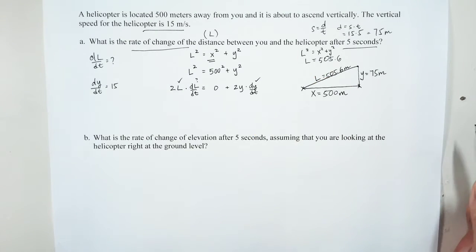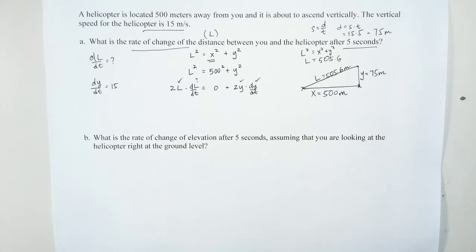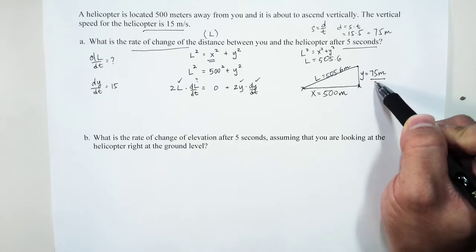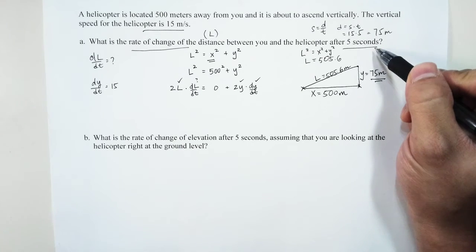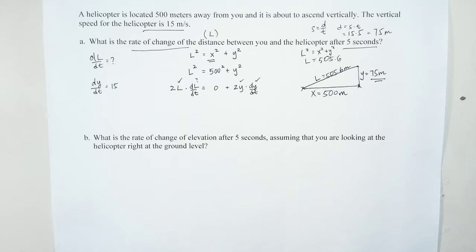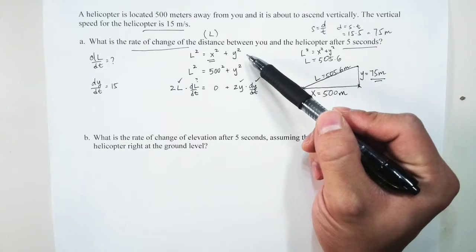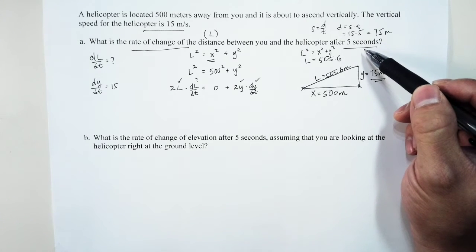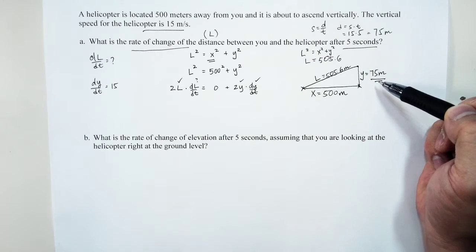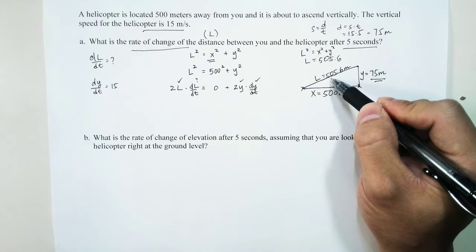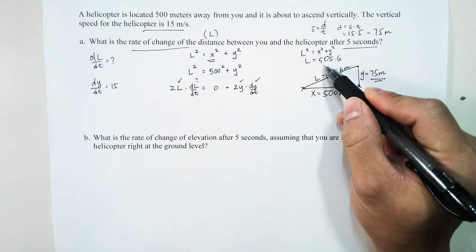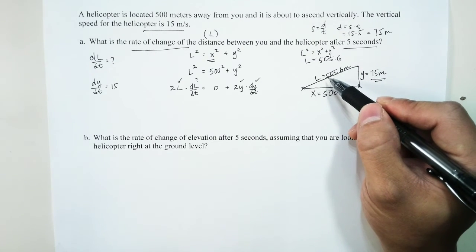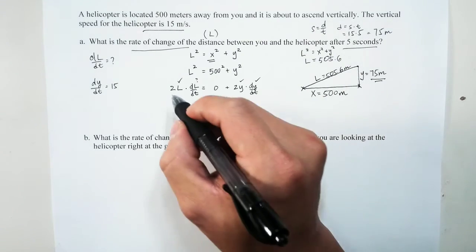We know dy/dt is 15 m/s and y is 75 meters. One challenge of this problem is that some information is not directly given — such as the 75 meters — you must derive it from the five seconds and the speed. You need to understand the equation you're using: since it's the Pythagorean theorem, you need the height, so you use the five seconds to calculate it. Similarly, you need l at that moment, calculated via Pythagorean theorem.